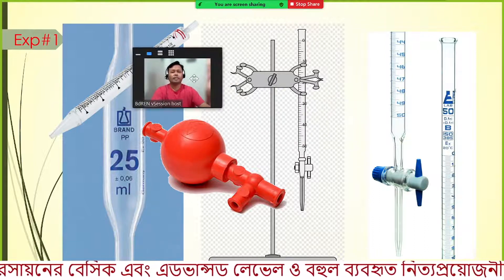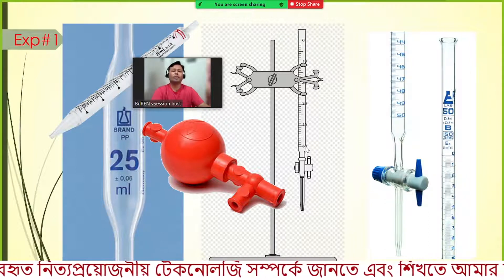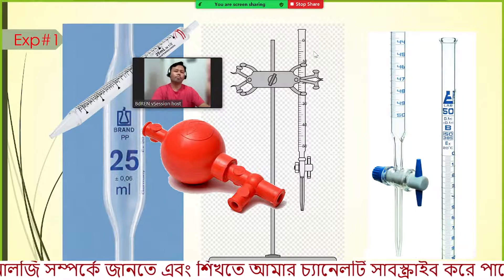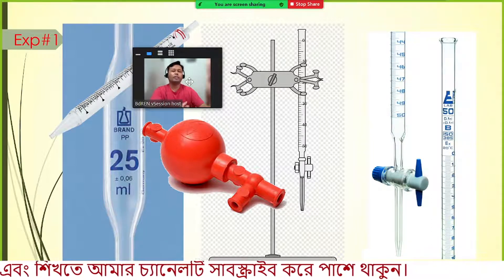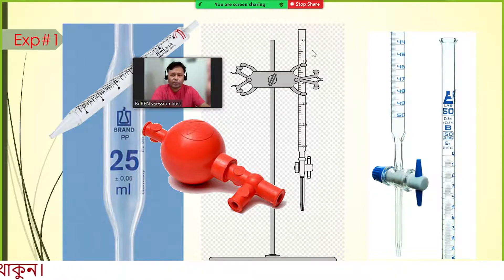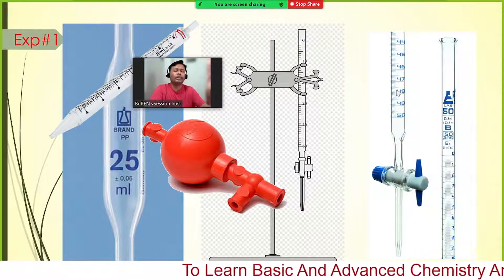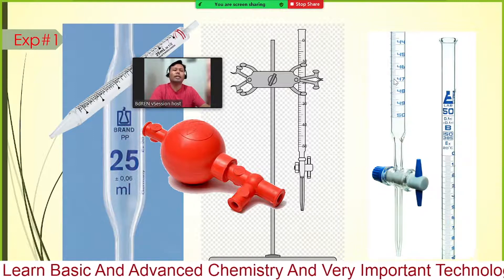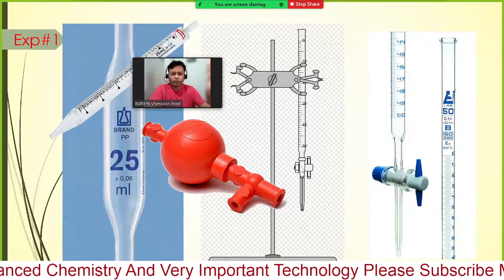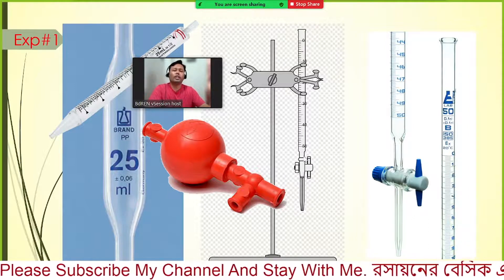The burette has a volume of 50 mL, graduated to 0.1 mL. Between major lines there are nine smaller divisions, so you can read to 0.1 mL or estimate to 0.05 mL. We will place the sodium hydroxide inside the burette because we do not know its concentration and we want the solution color to turn pink, which requires increasing pH by adding base.